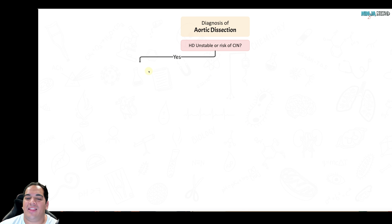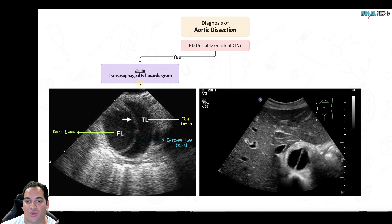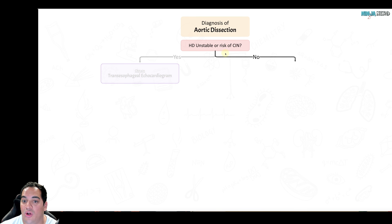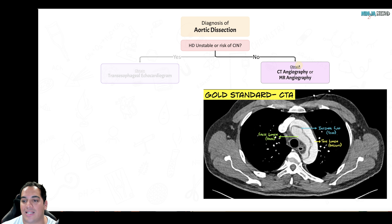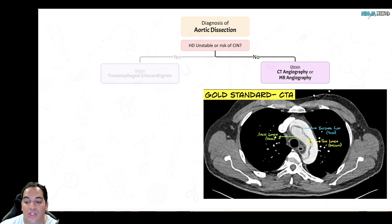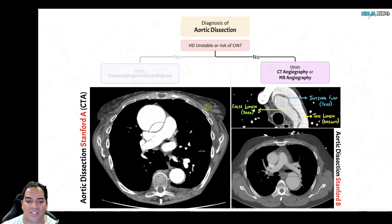If the patient is hemodynamically stable and has no risk of contrast-induced nephropathy, get the best possible test: a CT angiogram. If CT angiography is not available, MR angiography is equally effective. Both give excellent multi-dimensional views of the aorta, assess the severity of the dissection, and confirm the diagnosis.